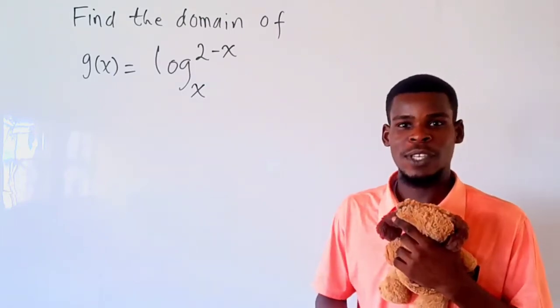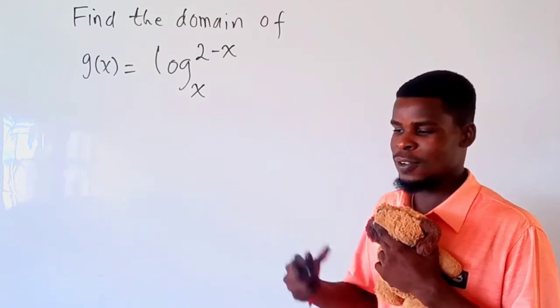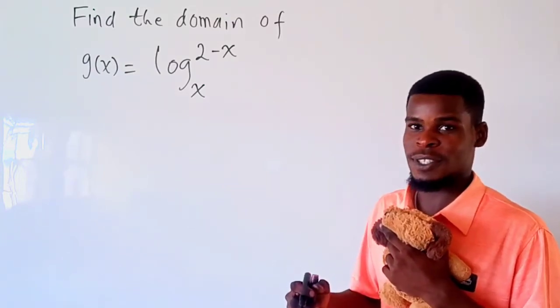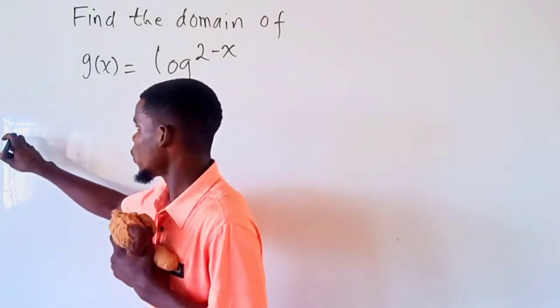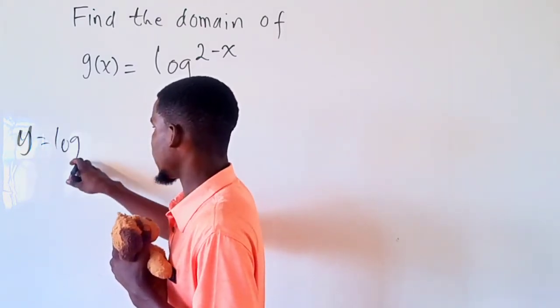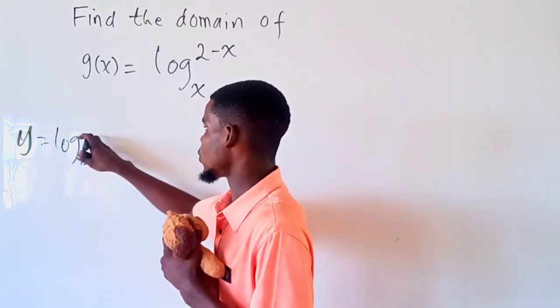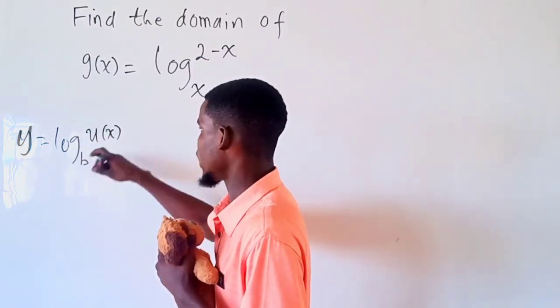How do we figure out what the domain of this function will be? Before I jump right into it, let me look at a little background when we talk about logarithmic functions. If we have a function, let's say y equals the logarithm base b of u(x), where b is the base raised to some function of x, then